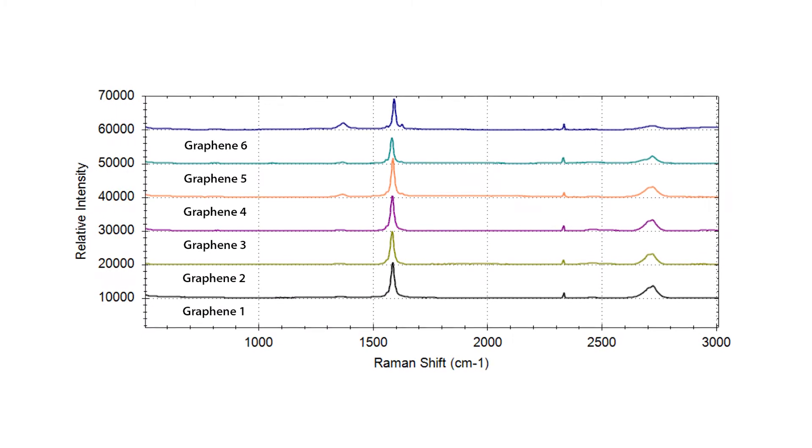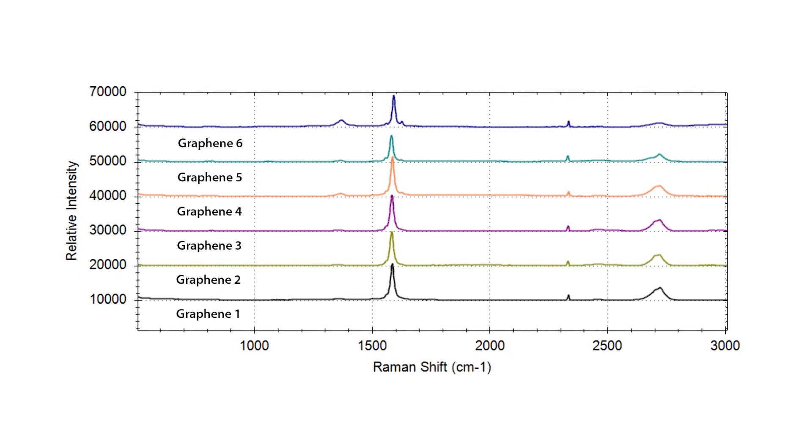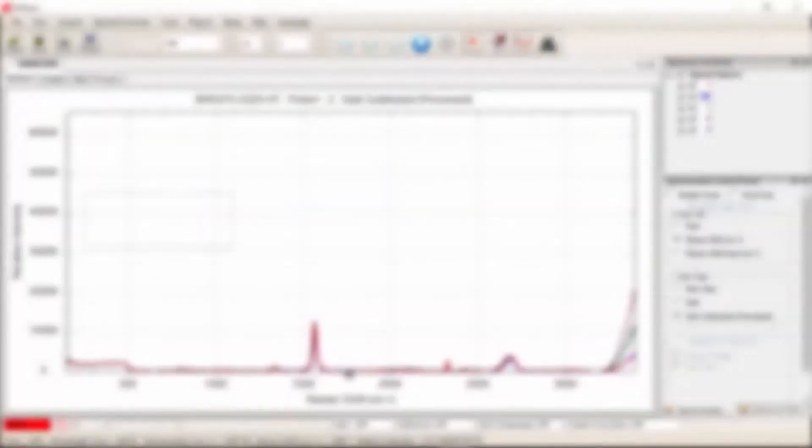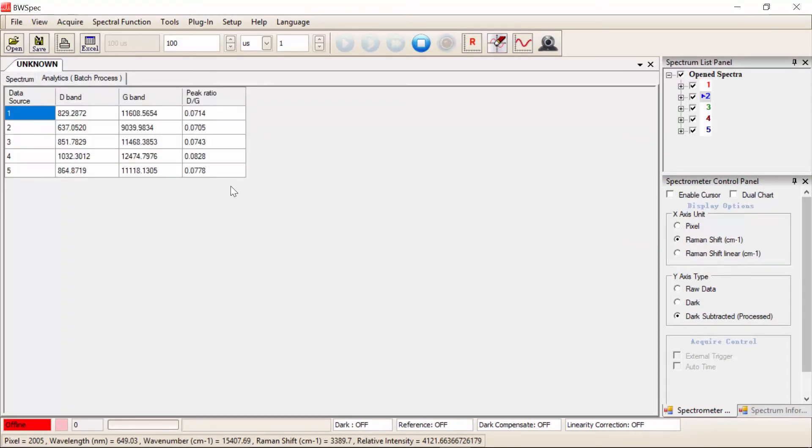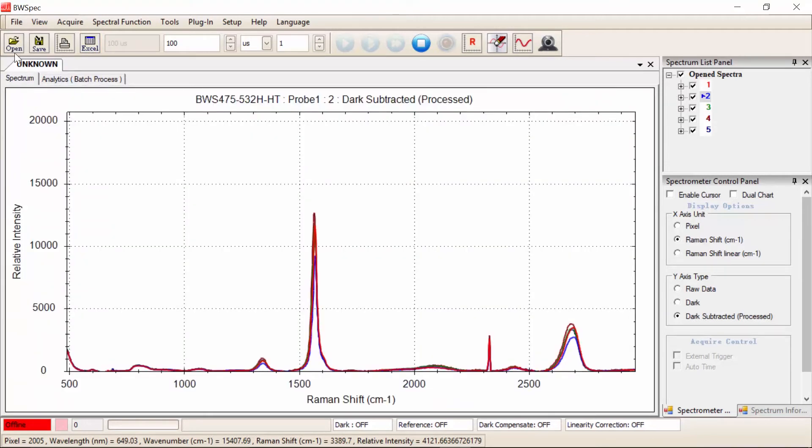BWSpec acquisition software can be used to monitor up to six Raman peak variables in real time and automatically calculate important peak parameters, such as the intensity ratio of the D-band and G-band, a powerful indicator of structural disorder within a carbon sample.